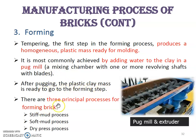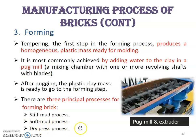There are three principal processes for forming brick: the stiff mud process, the soft mud process, and the dry press process. This picture shows the pug mills and extruders used in the forming stage.